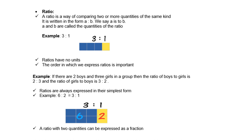Look at the example, 3 is to 1, so 3 blue blocks is to 1 yellow. Meaning that for every 1 yellow block, there's 3 blue, or for every 3 blue, there's 1 yellow.